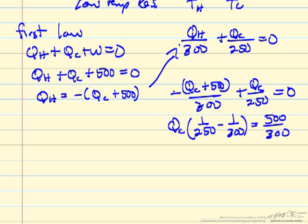And so I've just rearranged this, and we can solve this for QC. That means we can also calculate QH is minus 2490 plus 500, so 2,990 joules.